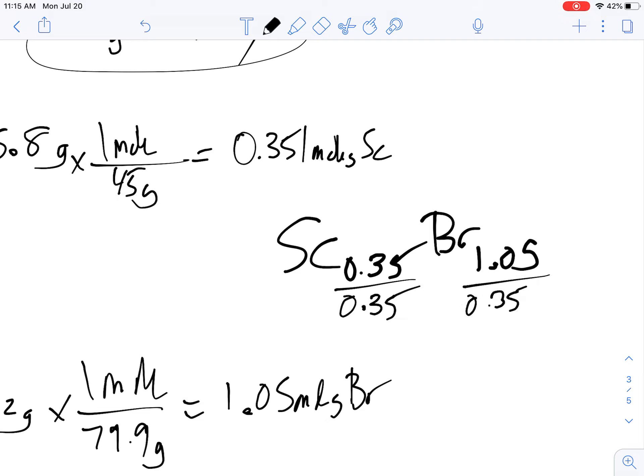And when you do that, 0.35 divided by 0.35 obviously becomes 1, and 1.05 divided by 0.35 becomes 3. So in other words, it is a 1 to 3 ratio. For every 1 scandium, there are 3 bromines, and so consequently, the formula for scandium bromide is ScBr₃.